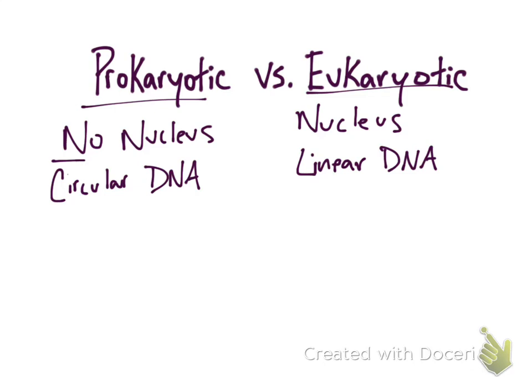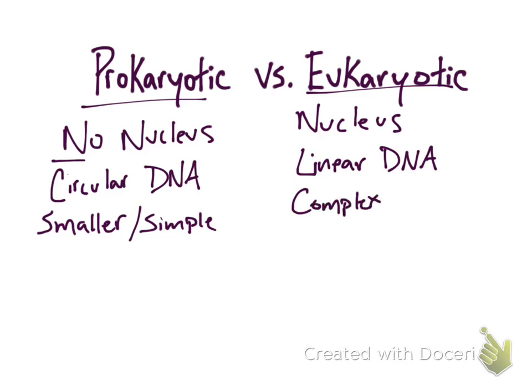Next, prokaryotic cells in general are much smaller and simpler compared to the eukaryotic cell. And obviously the opposite is true — eukaryotic cells are much more complex. They have more organelles, and they're also larger compared to the prokaryotic.